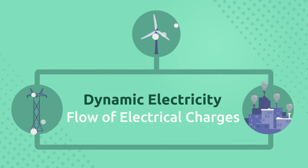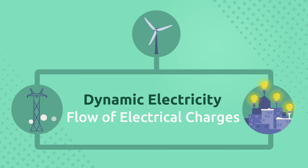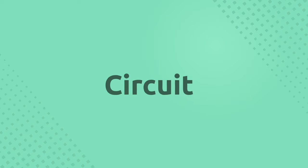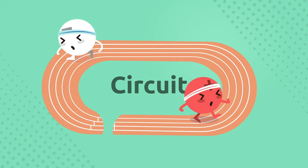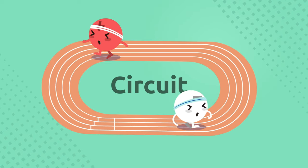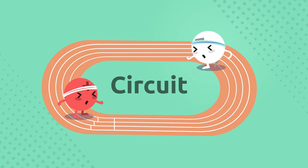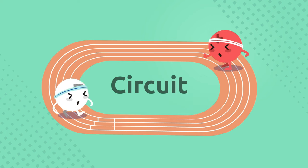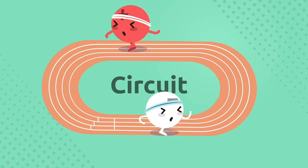Just as water flows in a river, so do electrical charges in a cable. In order for electrical charges to flow continuously, we need a circuit. A circuit is a closed path along which electrical charges travel.